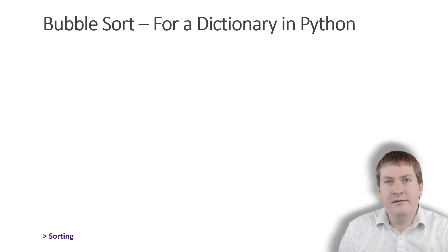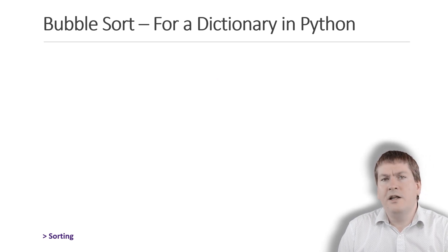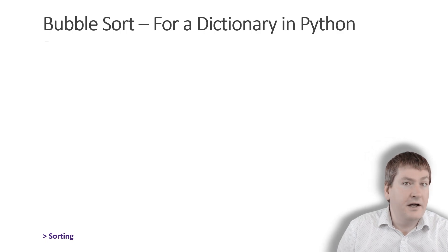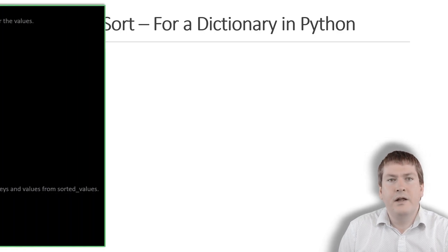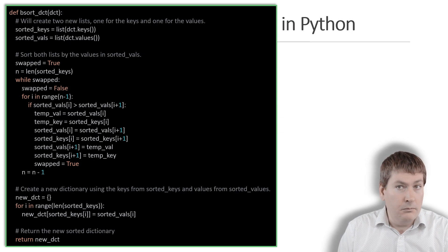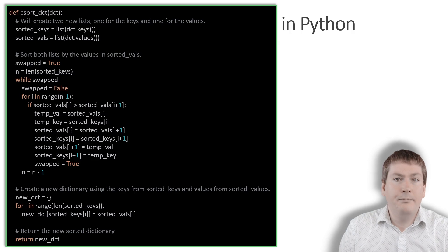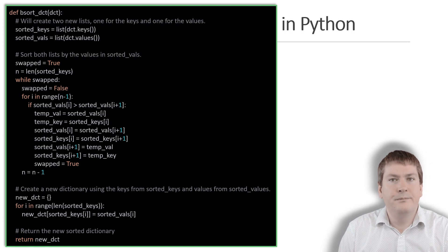That works fine for lists. But what about dictionaries? What if we want to use bubble sort on a dictionary, maybe to sort it by the values? Well, it's a bit more complicated but still definitely doable. Here we have an implementation of bubble sort that creates a copy of a dictionary sorted by the keys' values.